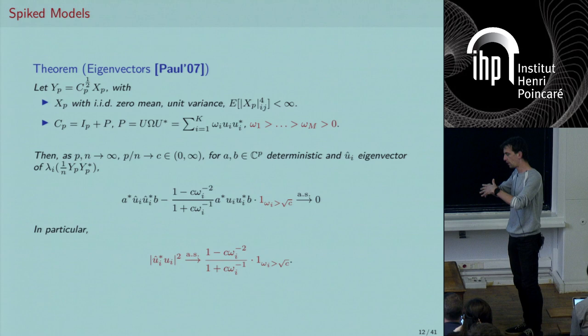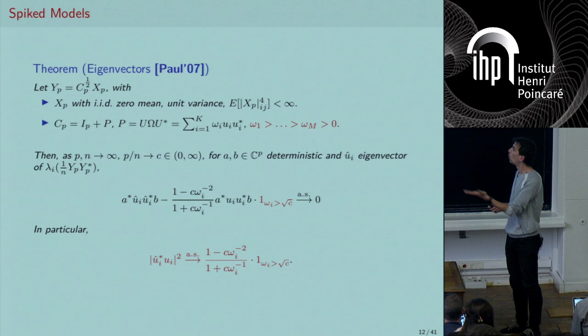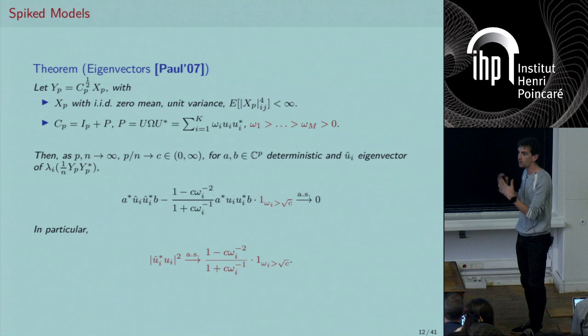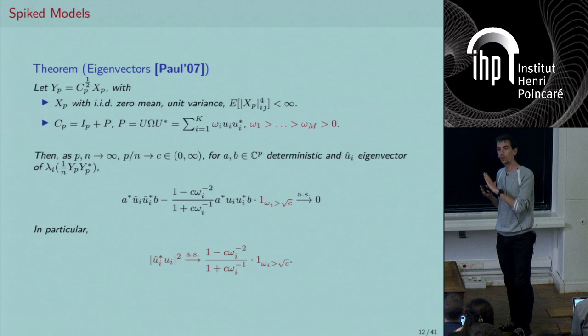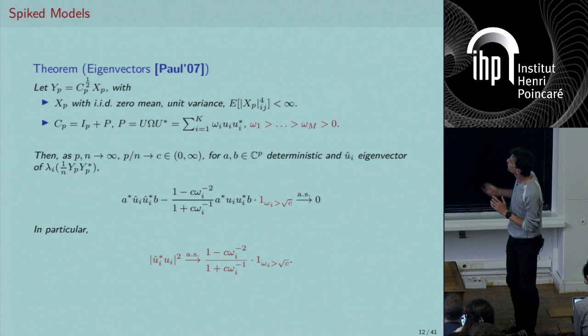That's all I want you to know about random matrix theory: there is this phase transition phenomenon. The eigenvalues are broader than expected but converge somewhere; you may or may not see the information you expect. In PCA, sometimes it's pure noise, but if you exceed a threshold you see something, and the correlation with the truth is something we can predict.